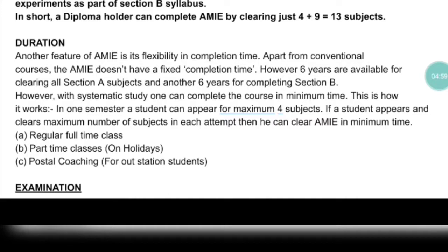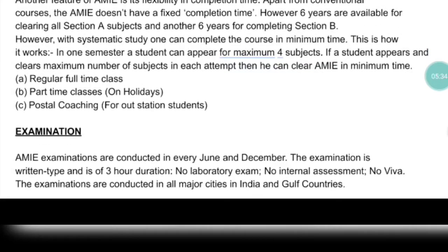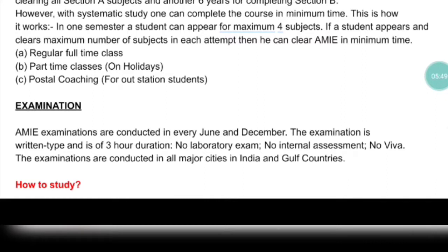Another feature of AMI is its flexible completion time. Unlike conventional courses, AMI doesn't have a fixed completion time. You must pass four subjects in Section A and nine in Section B, along with lab work and assignments. You can appear for up to four subjects each semester. If you pass all four Section A subjects in a single attempt, you can complete Section A within six months. A maximum of six years is allotted for Section A and six years for Section B, with no minimum time limit.